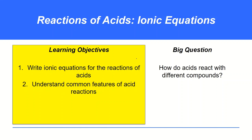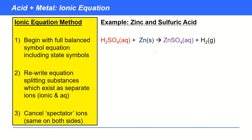Welcome to this video on reactions of acids. We're going to look at how acids react, specifically through the vehicle of ionic equations, which turn out to be a really powerful tool for understanding acid reactions. Let's begin with the simplest reaction: an acid with a metal. I'll use the example of zinc and sulfuric acid. The ionic equation method always begins with a full balanced symbol equation, and we must include state symbols.